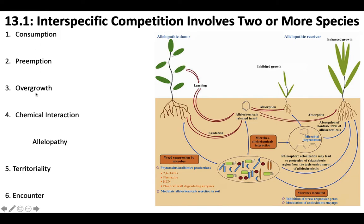Overgrowth is when one organism literally grows over another. They may or may not have physical contact — they could just shade out the other organism — inhibiting access to some essential resource. You see this commonly with plants controlling each other's access to light. Porcelain berry is a good example — it's a highly invasive species here in Pittsburgh that grows over trees in huge masses, similar to kudzu.